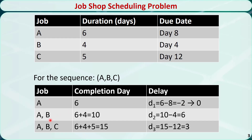Then we start to process job B. The duration of job B is 4 days, so it will be completed on 6 plus 4, which is day 10. The due date of job B is day 4, so the delay of the second job, job B, is D2 = 10 - 4 = 6, which means the job is delayed for 6 days. After that, we start to process job C. The duration of job C is 5 days, so it will be completed on 6 plus 4 plus 5, which is day 15. The due date of job C is day 12, so the delay of the third job, job C, is D3 = 15 - 12 = 3, which means the job is delayed for 3 days.